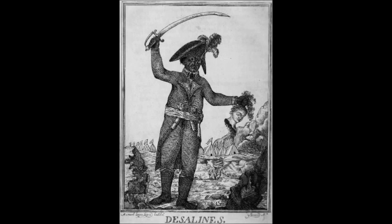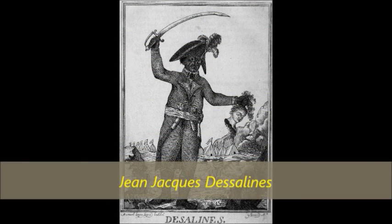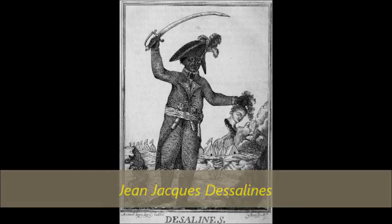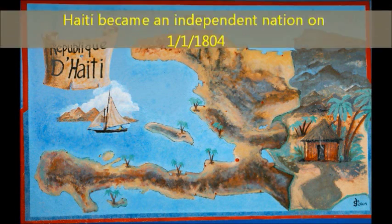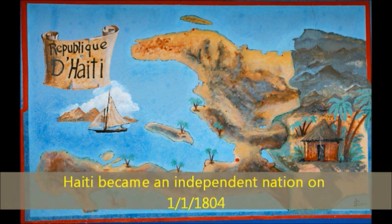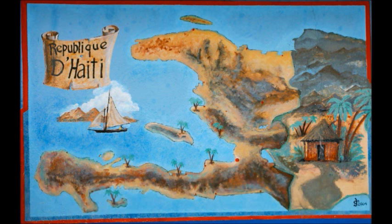One of Toussaint's trusted generals, Jean-Jacques Dessalines, took over as the leader of the revolution following Toussaint's death. He declared the colony's independence from France on January 1st, 1804, and named the new country Haiti, which means mountainous in the language of the native Arawak peoples, the original inhabitants of the island. The Arawak were wiped out by European diseases such as smallpox.